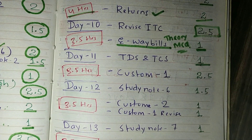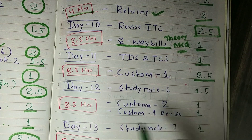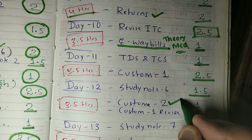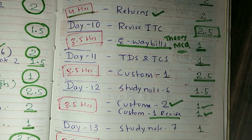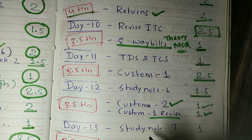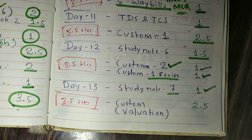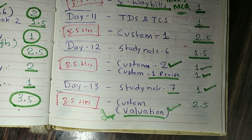Day 11, we will start customs — study note number 1 — which will take 2.5 hours. On day 12, we will cover study note number 6, which will take around 1 hour. After that, you will learn customs valuation, which is important because it is asked every year, and that will take 2.5 hours.